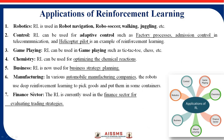These are the application areas where reinforcement learning works. In robotics, it is used for robot navigation, robot soccer, walking, juggling, etc. It is also used for controlling purposes such as helicopter pilot control, telecommunication, and factory processes, as well as online game playing. Other areas include chemistry for optimizing chemical reactions, business for strategy planning, automobile manufacturing, and the finance sector for evaluating trading strategies. Reinforcement learning can work in every field where decisions need to be made based on requirements and environment.